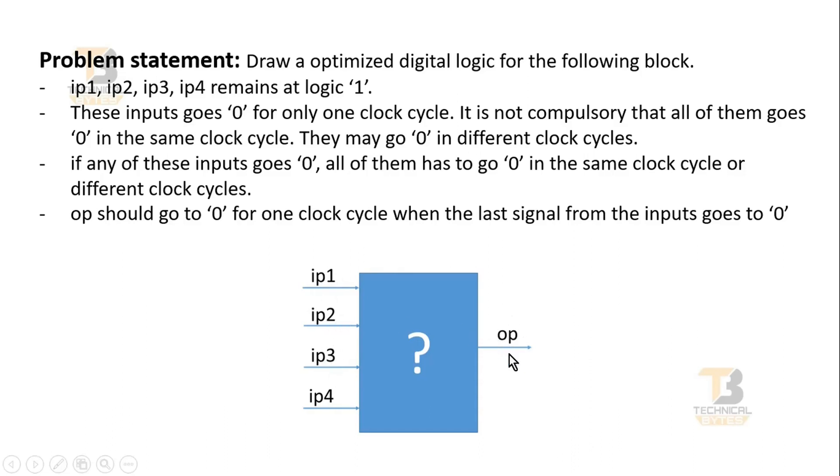Now what is the behavior of output signal OP? OP should go to '0' for one clock cycle when the last signal from these inputs goes '0'.